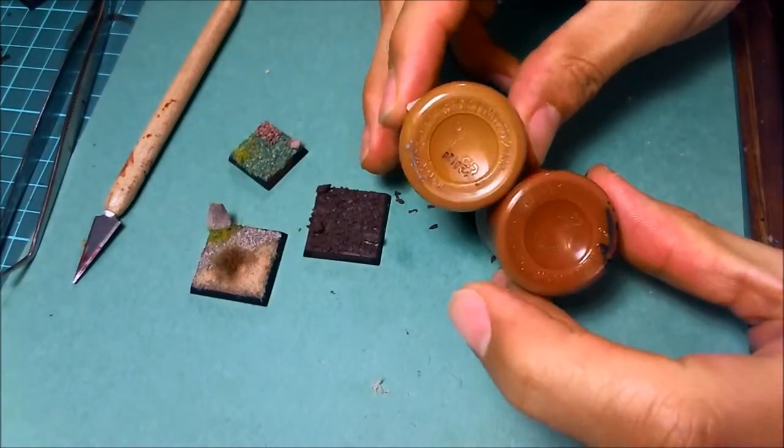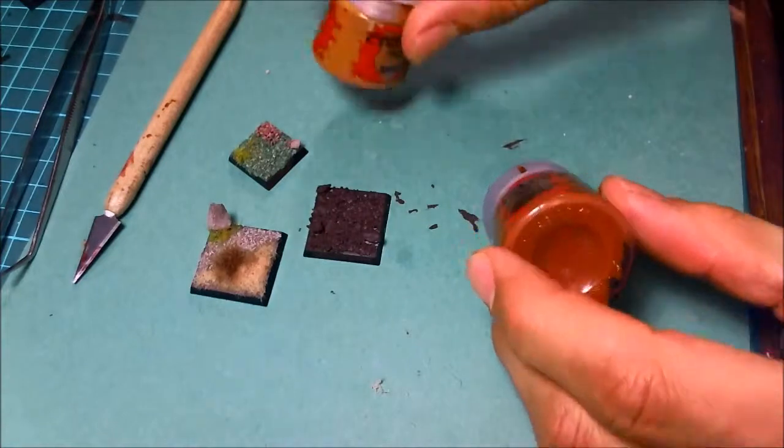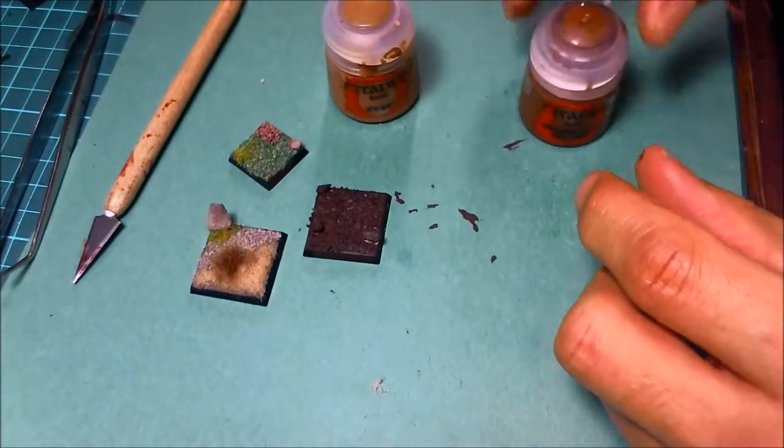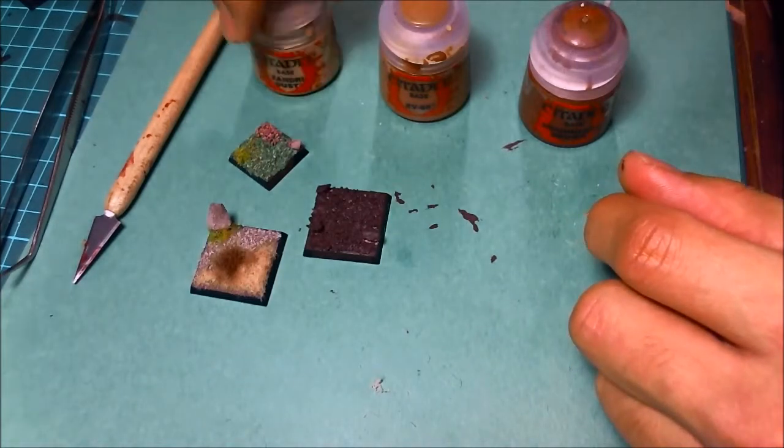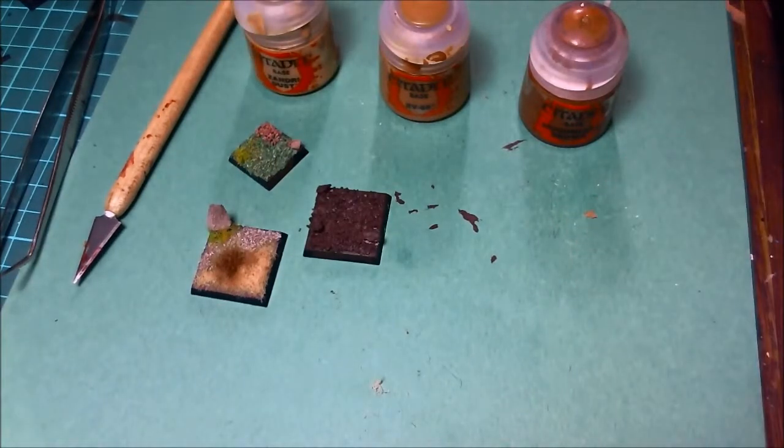Here, I would say, would be the next color. This is XV-88. So Mournfang Brown, XV-88, and then you need to go really light, Zandri Dust. So there's your triad of colors.